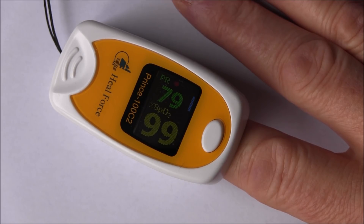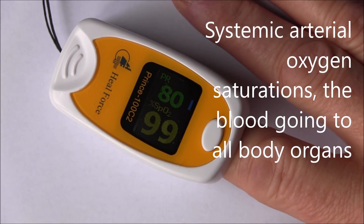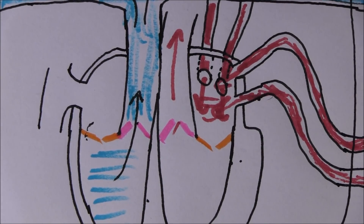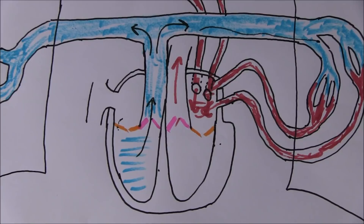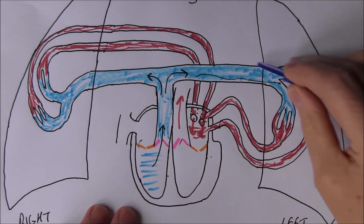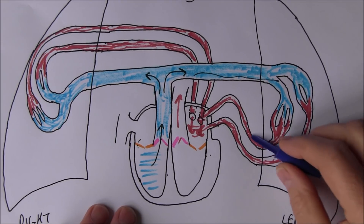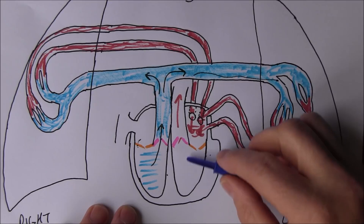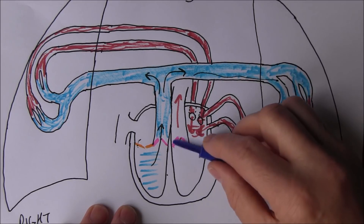Even though it's measuring peripheral oxygen saturations, it's going to be an indication of the oxygen saturations in the systemic arterial blood supply. In this diagram we see that deoxygenated blood is pumped to the lungs, oxygenated, and returned to the left side of the heart — the left ventricle — and then pumped out into the systemic circulation.